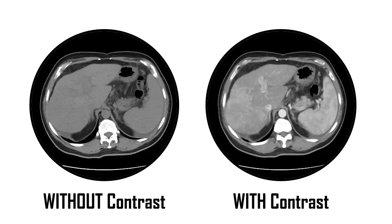These two images were acquired on the same patient. The patient's abdomen was scanned without contrast, as we see on the left, and then the patient was scanned again with contrast, as we see on the right. In the image to the left, without contrast, we can see most of the major structures of the abdomen. In some cases, they're hard to differentiate from each other, and we really don't see anything unusual.